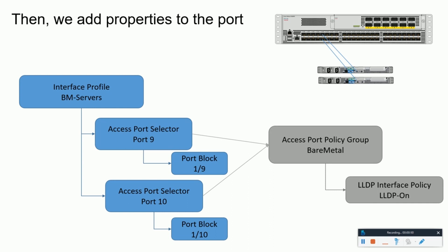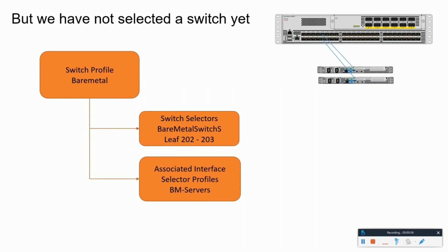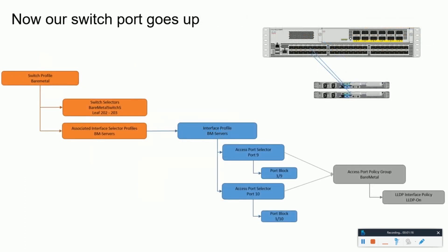Now we need to mention which switch these port profiles belong to. This can be done under the switch profile, where the switch selectors are mentioned with the switch IDs and where these interface profiles would be mapped. Combining the two, we can see how port number 9 and 10 for a switch are configured and now they should be up and operational. But what about the VLANs on the ports? We do not have the list of allowed VLANs on these ports yet.